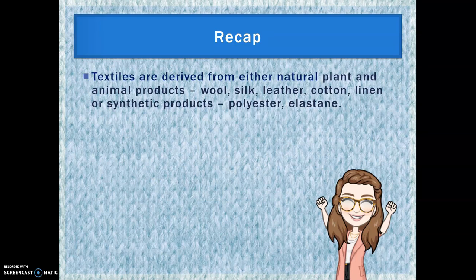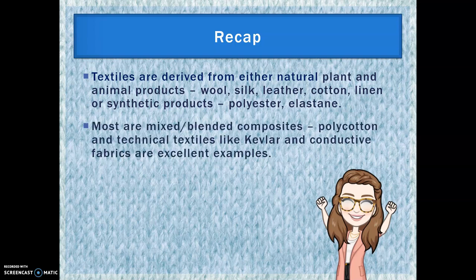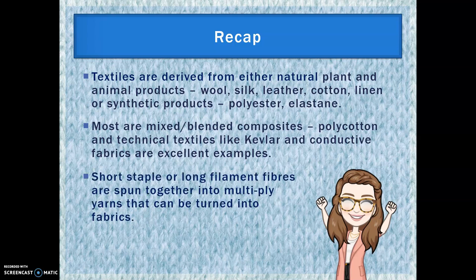To recap: textiles are derived from either natural plant and animal products — wool, silk, leather, cotton and linen — or synthetic products like polyester and elastane. Most are mixed or blended composites, such as poly cotton. Technical textiles like Kevlar and conductive fabrics are great examples. They begin with either short staple or long filament fibres, which are spun together into ply yarns and turned into fabrics. The three main types of fabric construction are woven, non-woven and knitted. Hope you learned a lot today — see you next time.